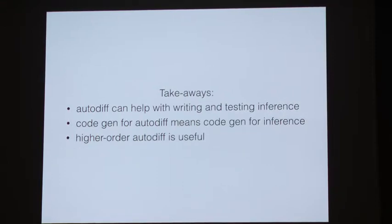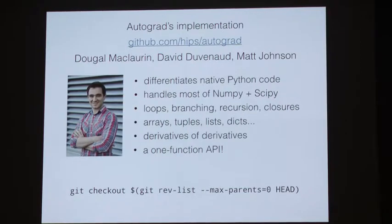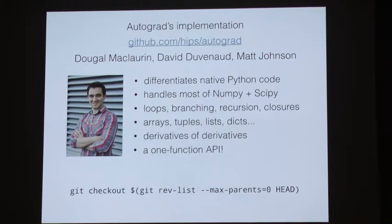The takeaways from the first part are that autodiff can help with writing exponential family inference code. Automatic differentiation software has really made the neural net revolution possible, and maybe other parts of machine learning could benefit from nice, clean software where it's easy to iterate and prototype. Also, if you build an amazing compiler for autodiff, that means you get an amazing code generator for inference as well.